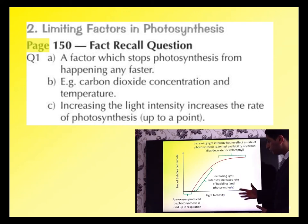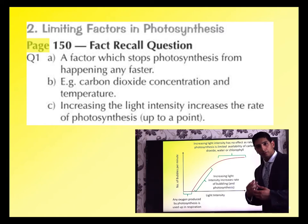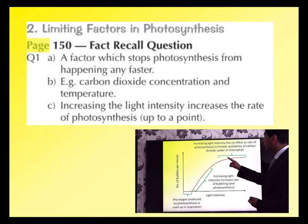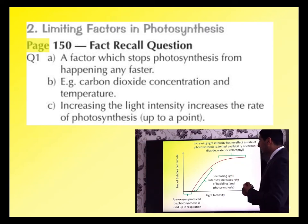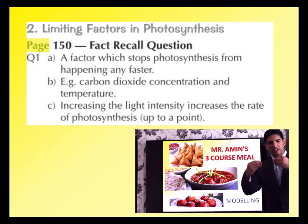One way of checking how fast the rate of photosynthesis is going is by counting oxygen bubbles produced. When you give light, the rate increases but then it will curve off, showing that something else is limiting.